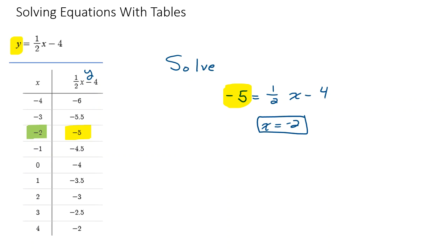And you could go through and check that if you wanted to. Now the table is a little bit limited. Let's say I wanted you to solve seven equals one-half x minus four. Well, if I look down my table here, I don't have a y value of seven. I could try expanding my table until I get to seven. That might be a lot of work.